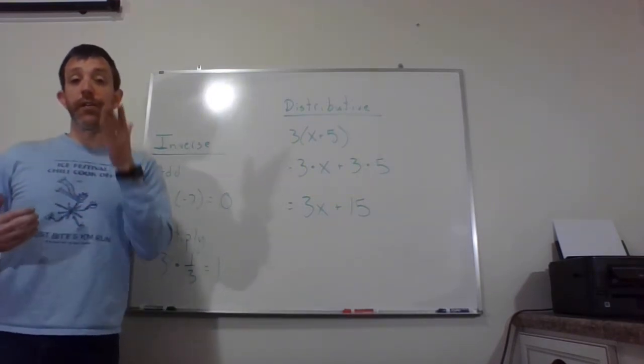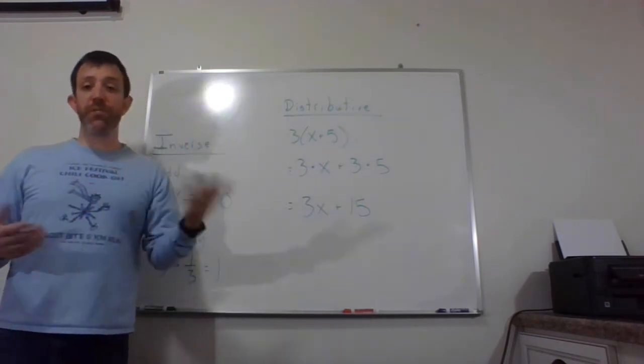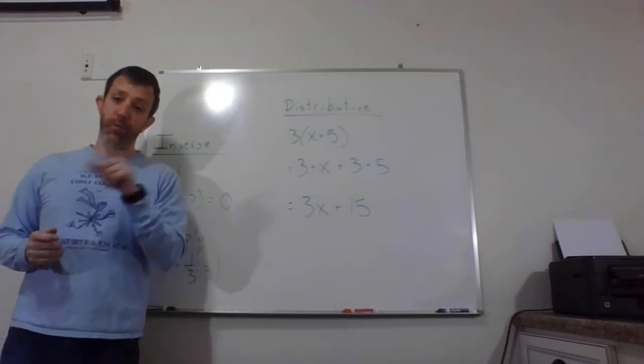If you put that three over one and you do three over one times one over three, when you go straight across, you get three over three, which is just one.